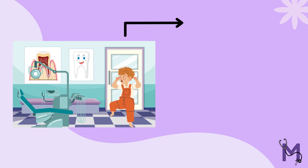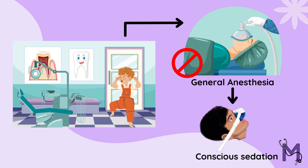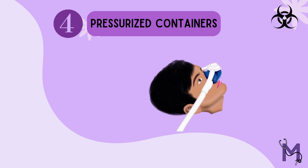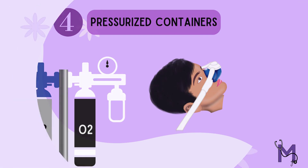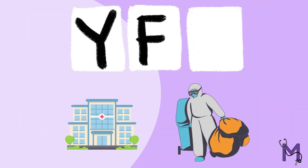When an anxious and uncooperative child walks into your clinic, how do you proceed with treatment without putting the child under general anesthesia? We use the technique of conscious sedation. This procedure requires a gas cylinder of oxygen and nitrous oxide each. These gas cylinders, when ready to be disposed of, can be categorized as pressurized containers.